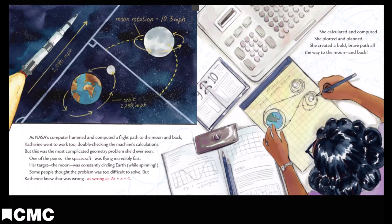One of the points, the spacecraft, was flying incredibly fast. Her target, the moon, was constantly circling Earth while spinning. Some people thought the problem was too difficult to solve. But Catherine knew that was wrong, as wrong as 25 divided by 5 equals 4. She calculated and computed. She plotted and planned. She created a bold, brave path all the way to the moon and back.